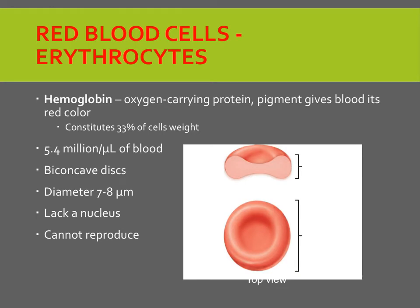Let's start talking about red blood cells, or erythrocytes. Erythrocytes have hemoglobin, which is an oxygen-carrying protein, and this pigment gives blood its red color. Hemoglobin constitutes about 33% of the cell's weight. There are about 5.4 million red blood cells per microliter of blood. There are a lot of red blood cells. They are a biconcave disc and lack a nucleus, which means they cannot reproduce. Their diameter is about seven to eight micrometers.